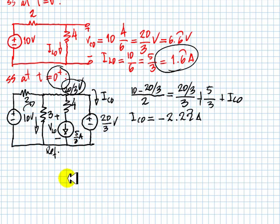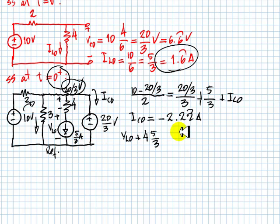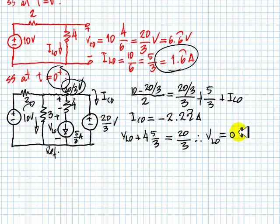The voltage in the branch is 20 thirds of a volt and the current in the branch is 5 thirds of an amp, so we write a KVL equation for that branch. Going up by VL0, plus 4 times 5 thirds of an amp — the drop in the 4 ohm resistor due to this current — equals 20 thirds of a volt. From there we determine that the voltage in the inductor is 0 volts.